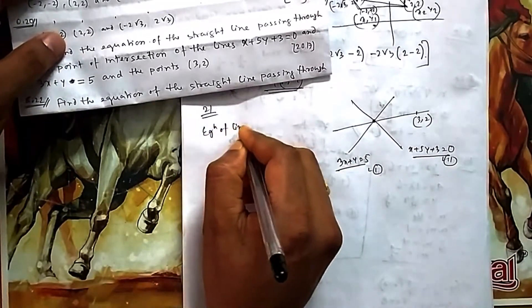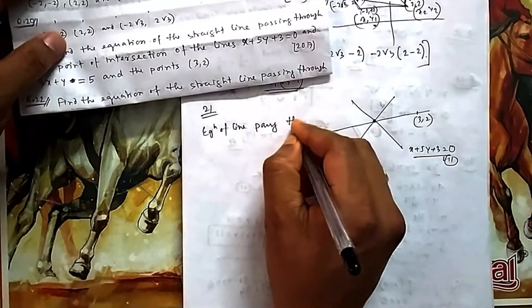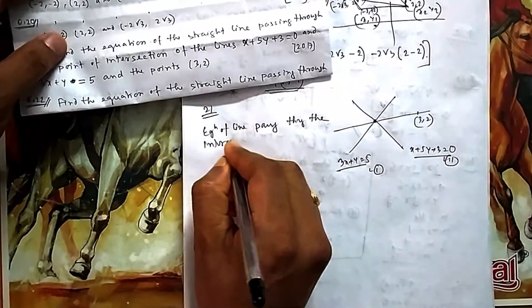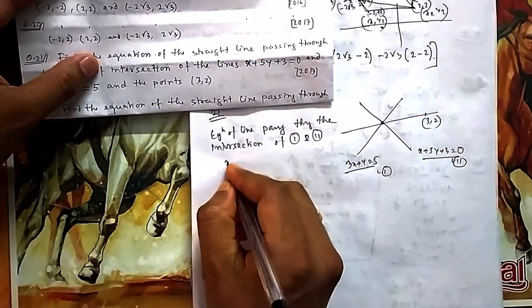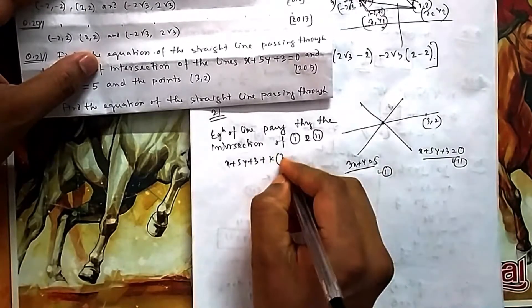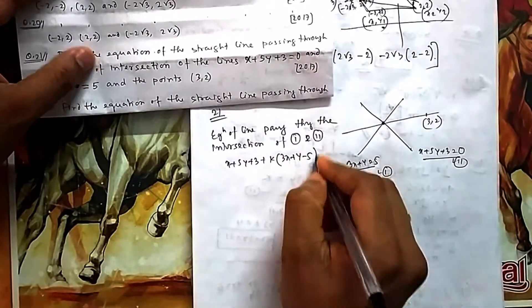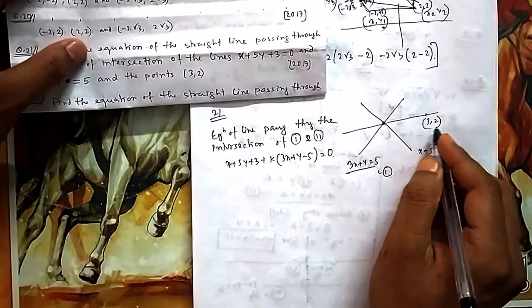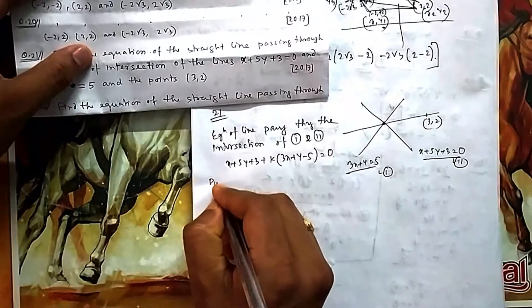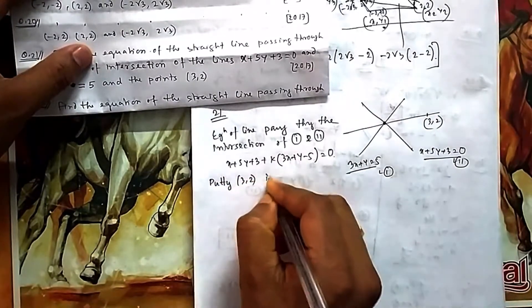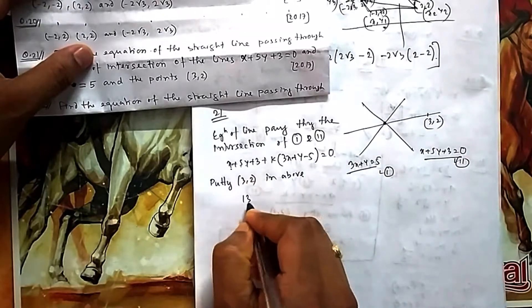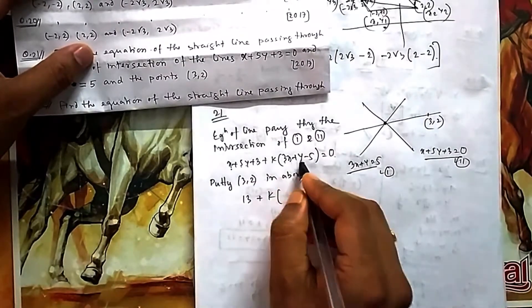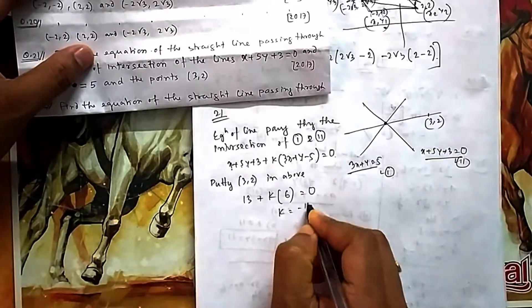So the equation of the line passing through the intersection of lines one and two is: x + 5y + 3 + k(3x + y − 5) = 0. Now this line has to pass through (3, 2), so if you put (3, 2) it should satisfy. Putting (3, 2): 3 + 10 + 3 = 16, and k times (9 + 2 − 5) = 6k. So k will be equal to −16/6.